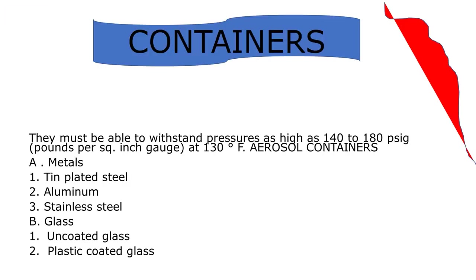Containers must be able to withstand pressures as high as 140 to 180 psig at 130 degrees Fahrenheit. Aerosol containers are of two types: metals or glass. Metals are subdivided into tin-plated steel, aluminium, and stainless steel. Glass containers are of two types: uncoated glass and plastic-coated glass.